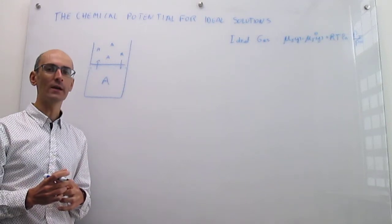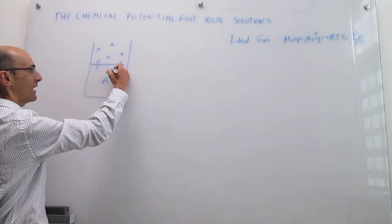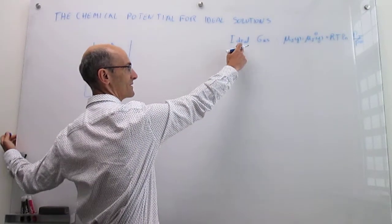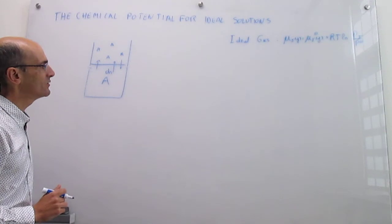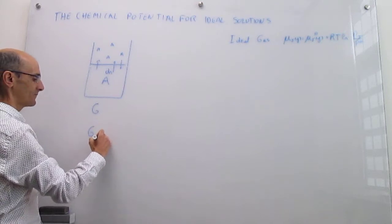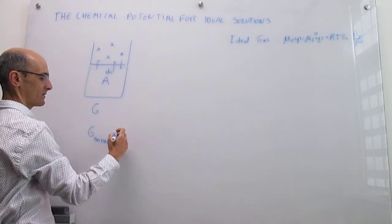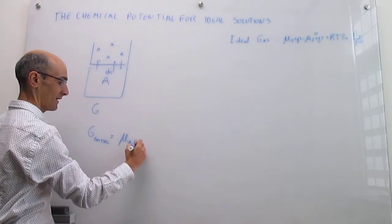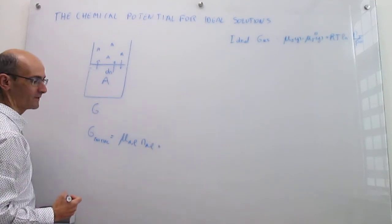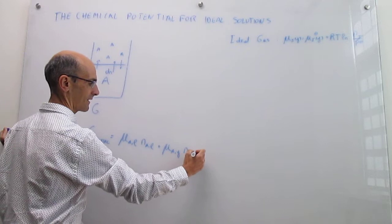Let's calculate what would be the change in Gibbs energy if a little bit of this liquid A were to turn into the gas. Before the transformation takes place, the total Gibbs energy initially is simply the sum of the Gibbs energies of the liquid and the gas. That is the molar Gibbs energy of A in the liquid phase multiplied by the number of moles of A in the liquid phase, plus the chemical potential of A in the gas phase multiplied by the number of moles of A in that gas phase.